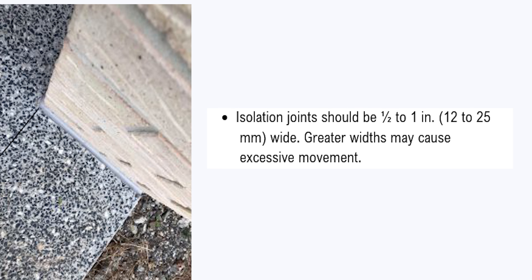Isolation joints should be ½ to 1 inch wide, that means 12 to 25 mm wide. Greater widths may cause excessive movement in isolation joints, so we have to be careful while providing the width of these joints.